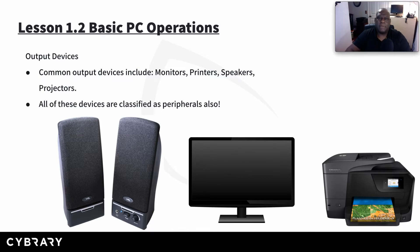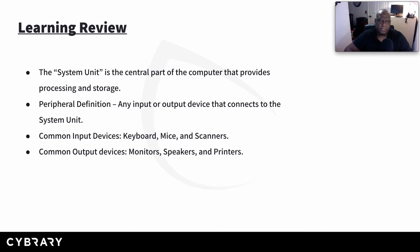So hopefully you're getting the basic understanding. First we have the CPU — its basic functionality is processing and storage. Then we have to input information into that CPU, whether it's from a keyboard, a mouse, or whatever. Then if it's not being stored, it's being output somehow through speakers, monitors, printers — anything that has an output is an output device. We found out what the system unit is: it is the central part of the computer that provides processing and storage. The peripheral definition — anything input or output connected to that system unit is a peripheral.